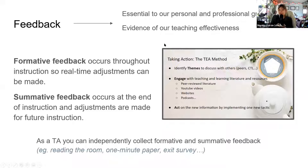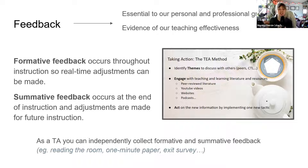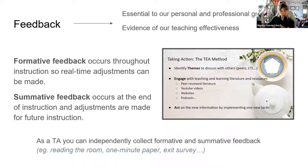Feedback is essential to personal and professional growth and is evidence of teaching effectiveness. There are two types: formative feedback, which occurs throughout instruction for real-time adjustments — such as gauging body language to see if students are being receptive — and summative feedback at the end, reflecting on thoughts about the instruction for adjustments in future iterations. As a TA, you can independently collect both formative and summative feedback — read the room, do a little exit survey.